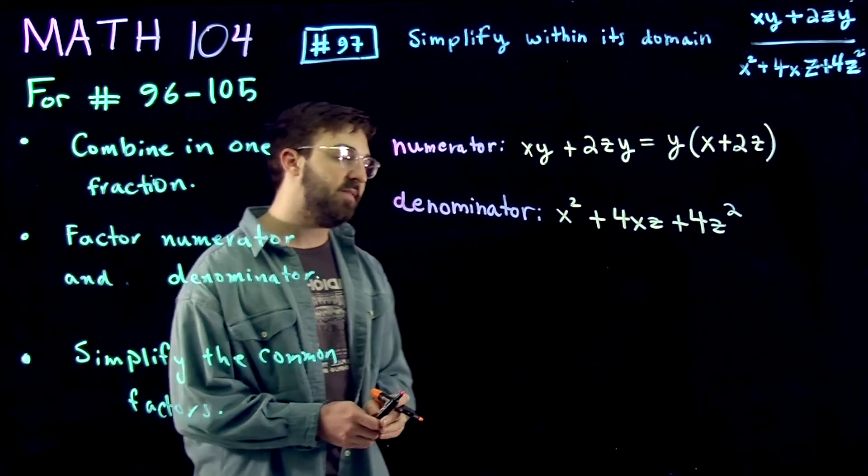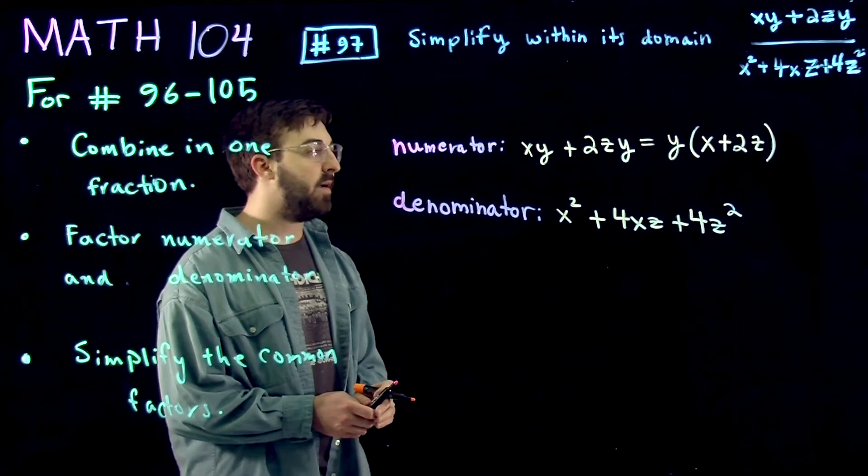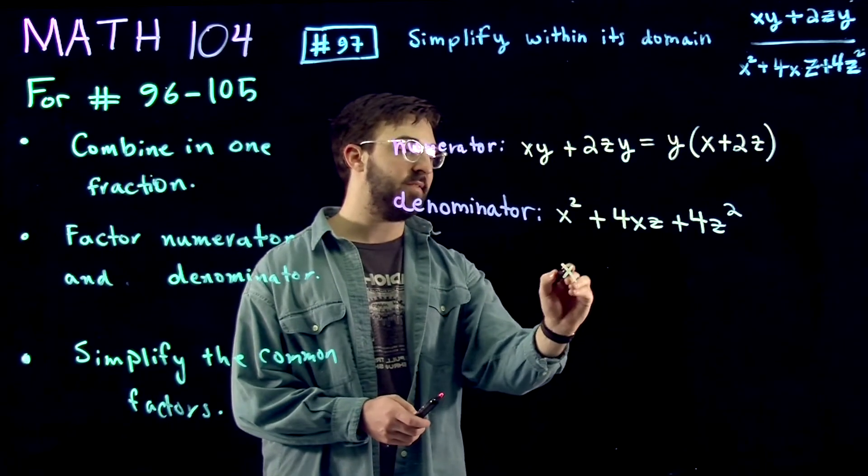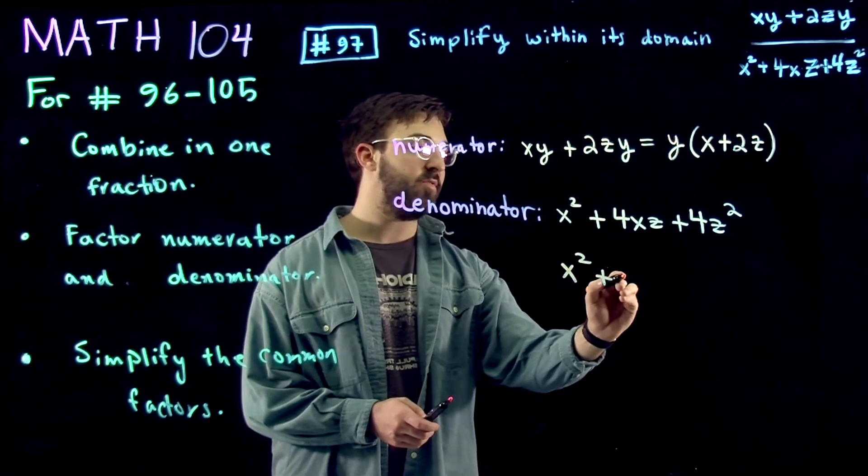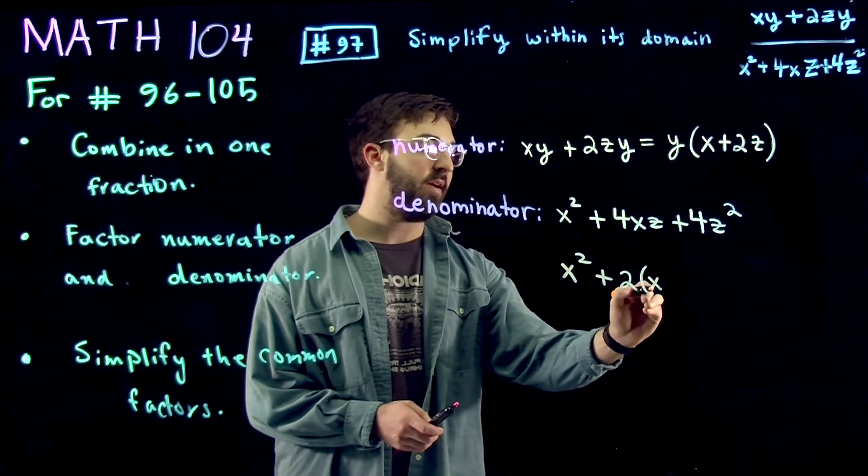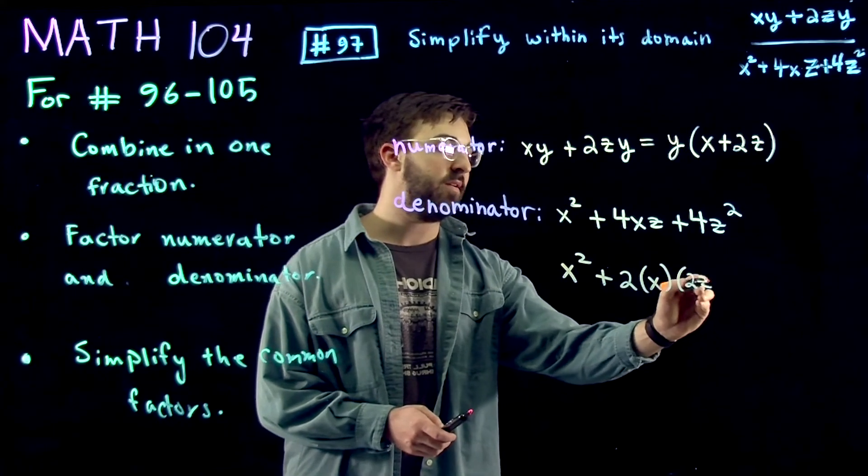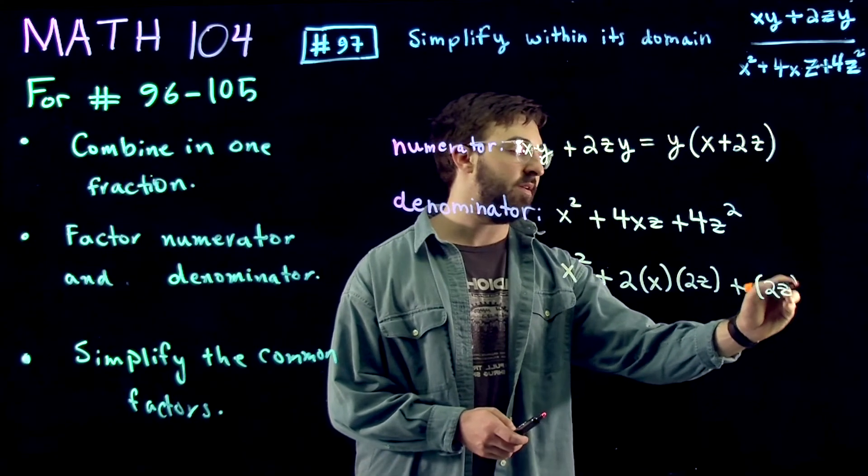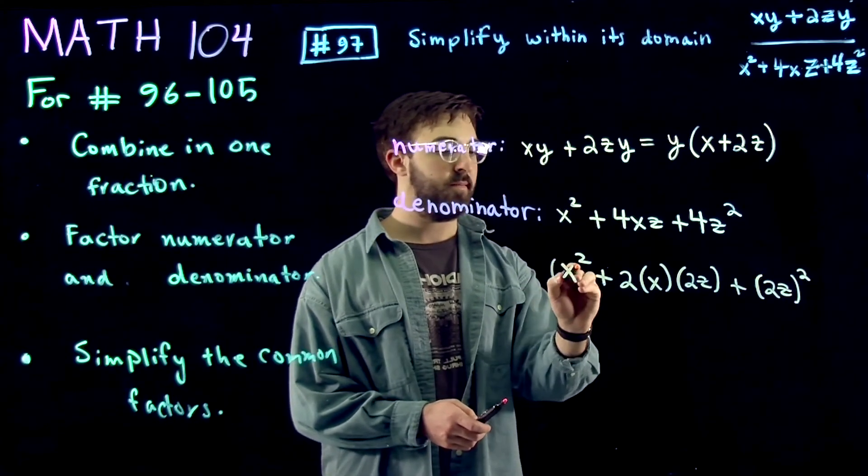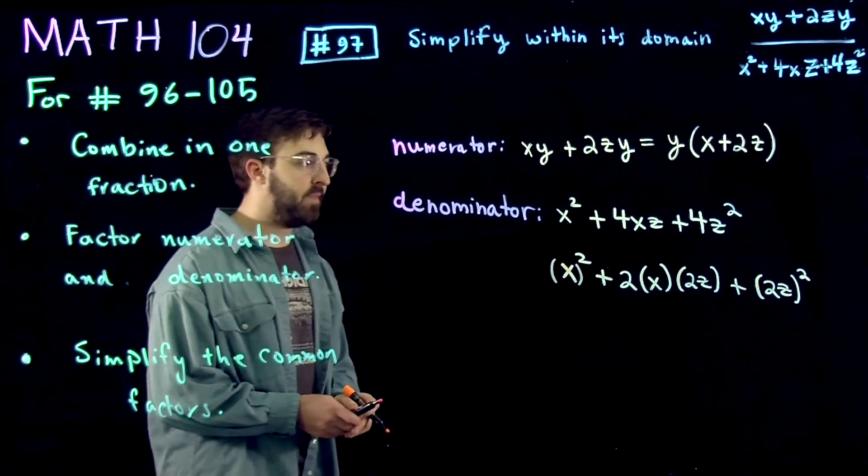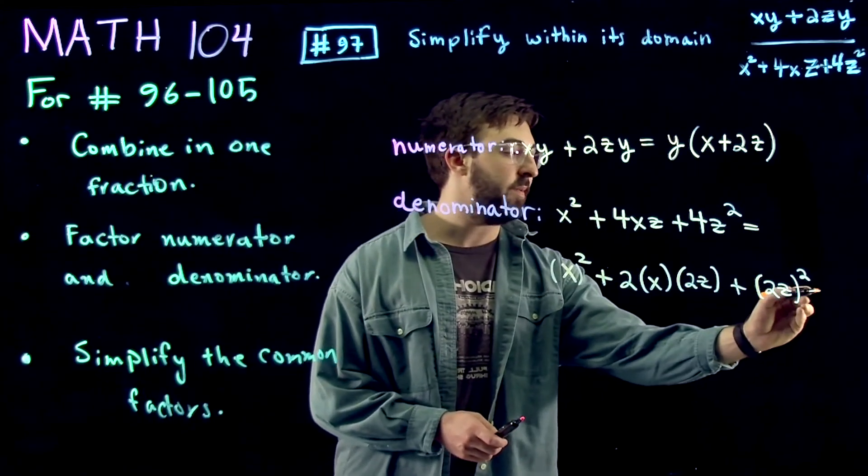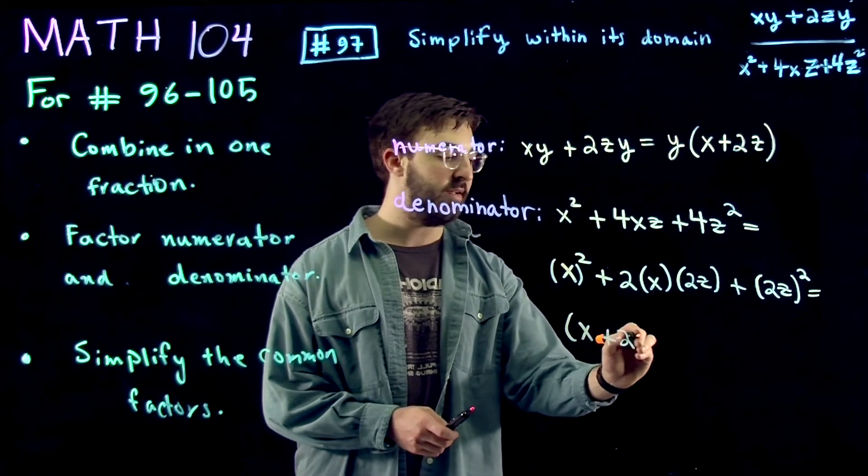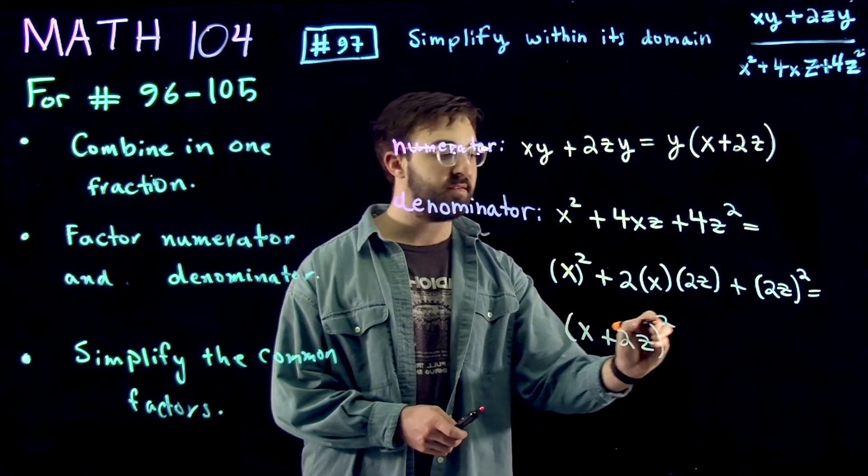And if you'll notice, this is just a binomial expansion. If we rename this x squared, this is 2 times x times 2z, and this is 2z squared. So from this, you just use the binomial expansion formula. It says that you just do x plus 2z all squared.